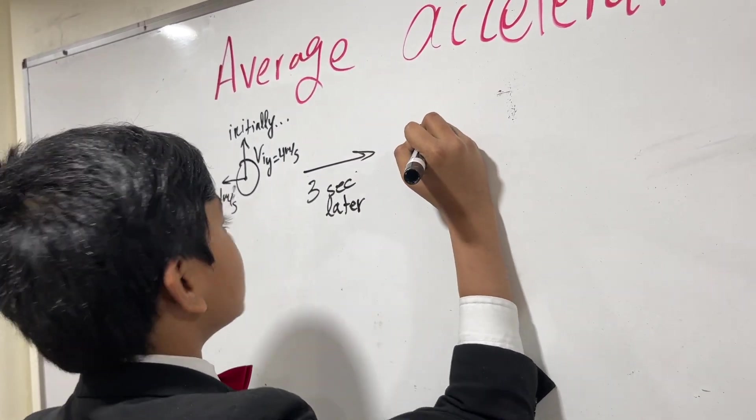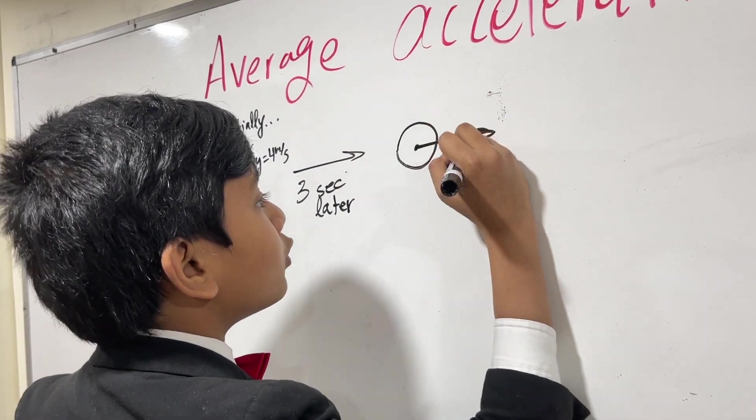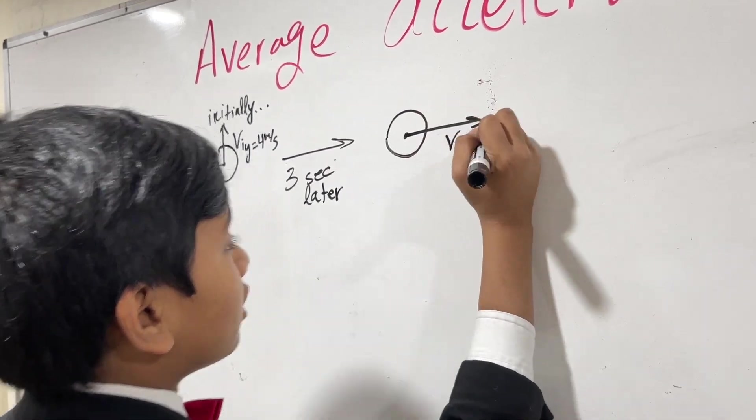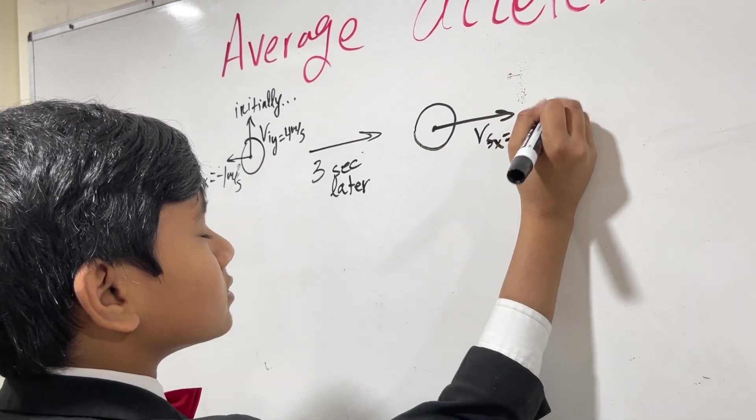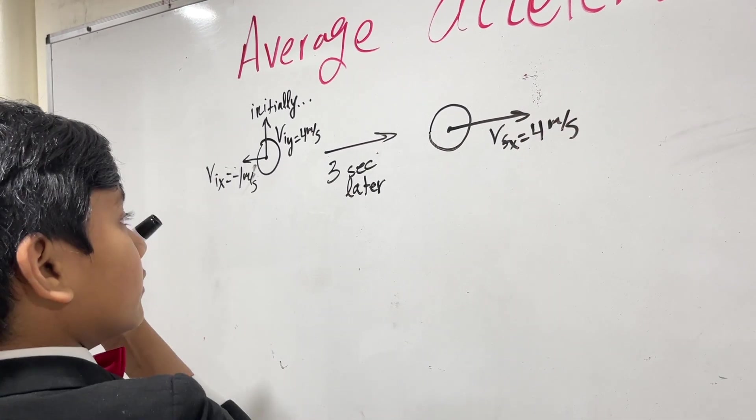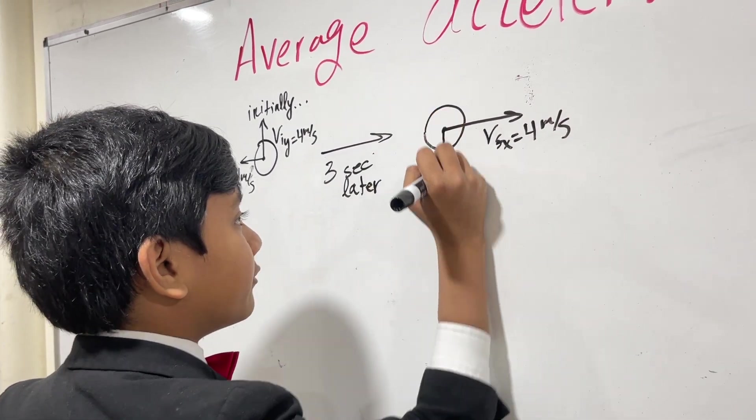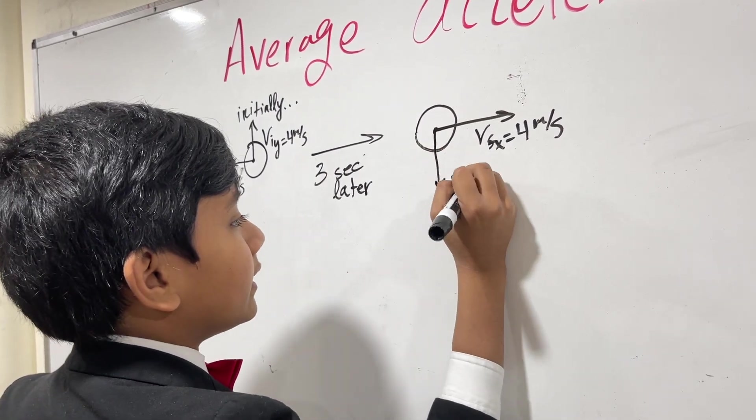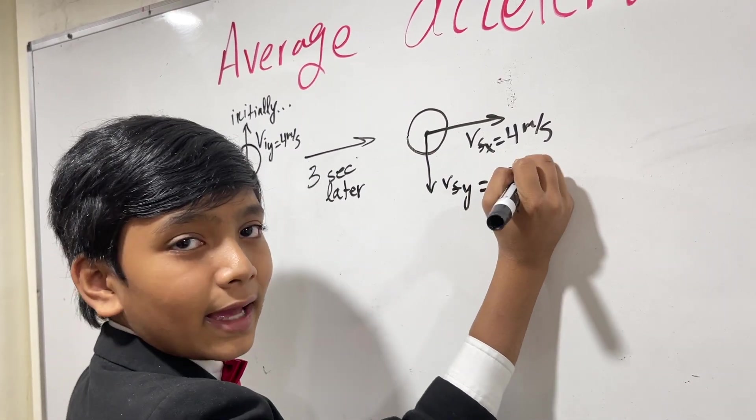Vix is now 4 meters per second. So, we can call it Vfx. Yes. And then, Viy is now Vfy, and it is negative 2 meters per second.